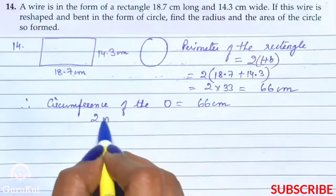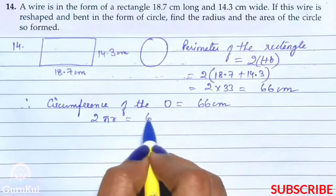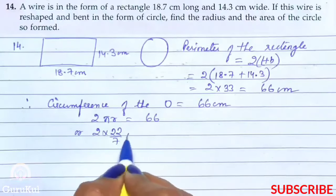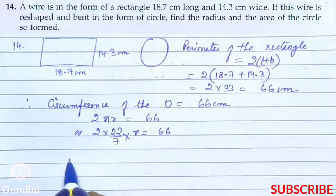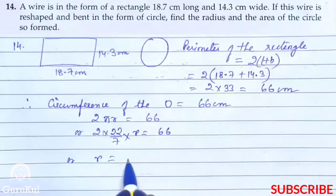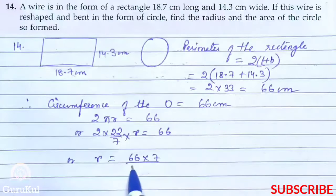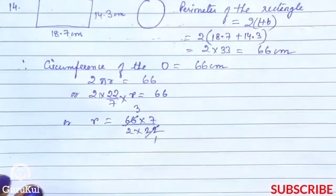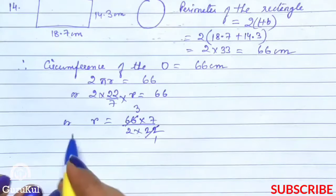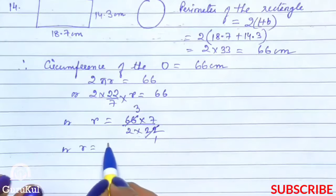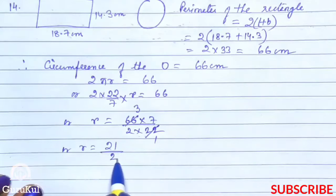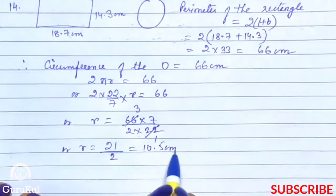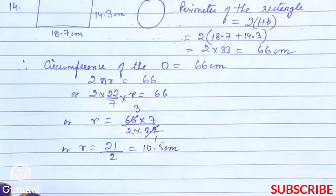Therefore circumference of the circle is equal to 66 cm. So 2πr is equal to 66, or 2 into 22 by 7 into r is equal to 66, or r is equal to 66 into 7 by 2 into 22. 22 ones and 22 threes are 66, or radius is equal to 21 by 2 which is 10.5 cm.